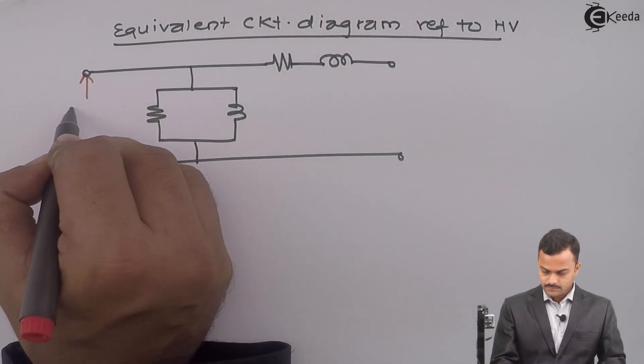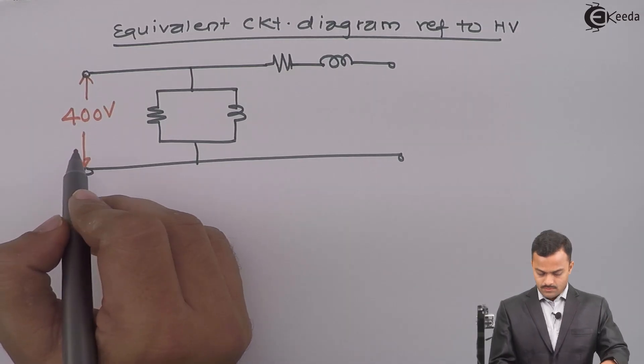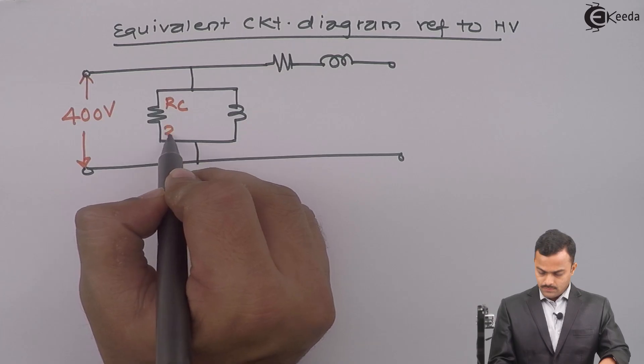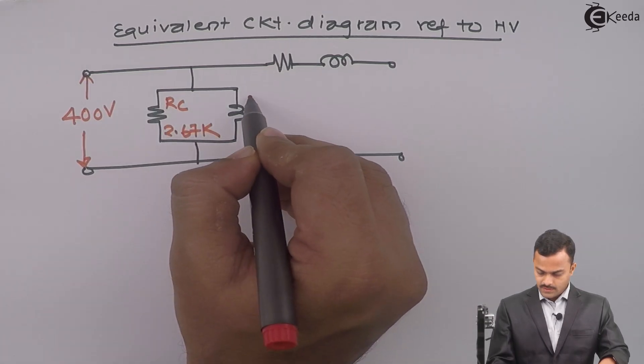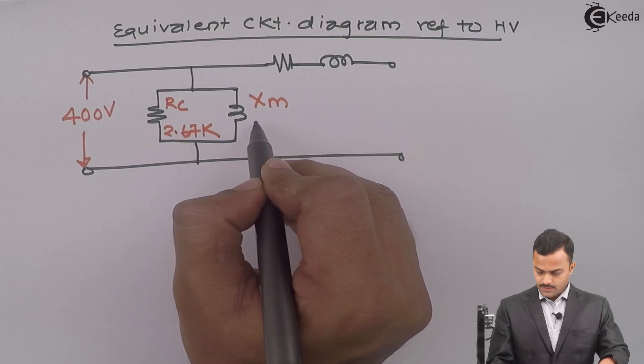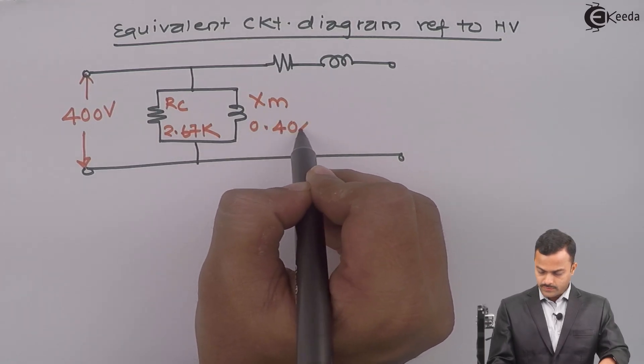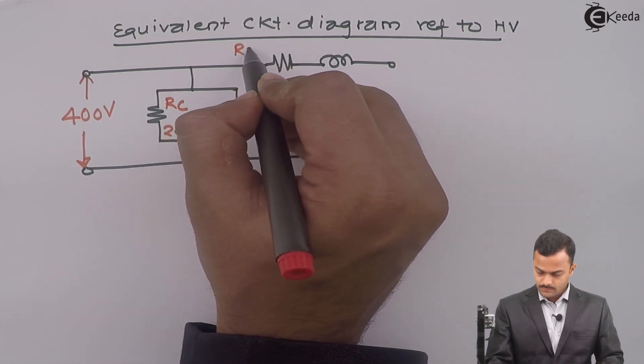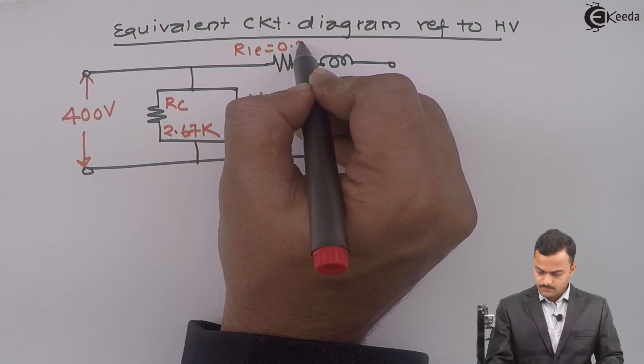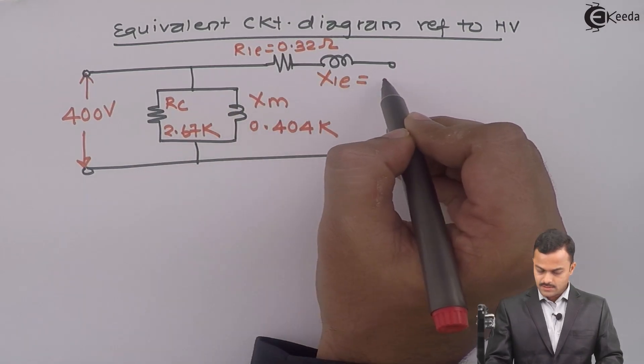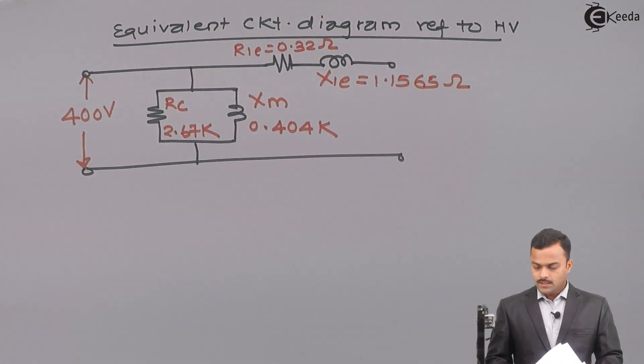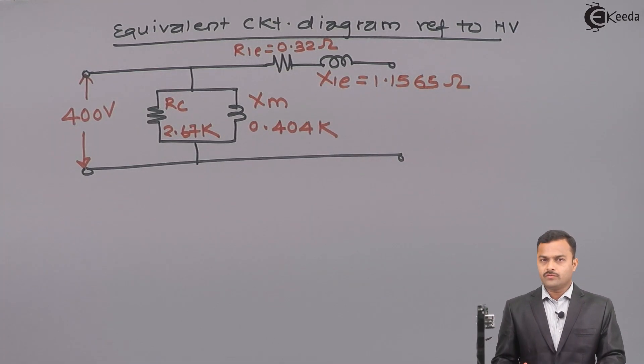It will be like this: RC, XM, R1E, X1E, and this will be high voltage side. So, high voltage side is 400. We got RC as 2.67 kilo ohm, XM 0.404 kilo ohm, R1E we got 0.32 ohm, and X1E is 1.1565 ohm. So, this is the equivalent circuit diagram we are getting whenever we are referring to the high voltage side.